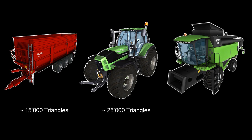For very large and complex machines like combine harvesters, only the details that are very important should be modeled. For these models, 50,000 triangles should be the limit.